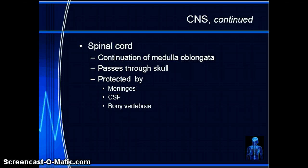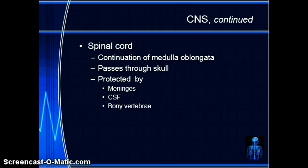The spinal cord is your communication center. It is a continuation of the medulla oblongata, passes through the skull, and is protected by meninges, cerebral spinal fluid, and the vertebrae. The spinal cord transmits impulses to and from the brain via spinal nerves. There are 12 pairs of spinal nerves responsible for communicating sensation — which is important when thinking about someone who has had an epidural or spinal anesthetic, where what they can feel indicates which nerve the anesthetic has been introduced into.